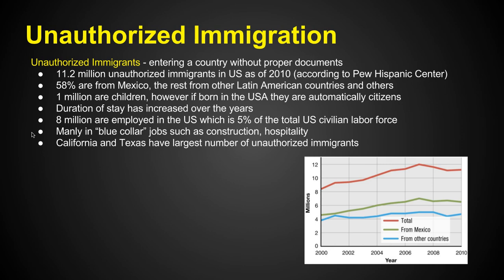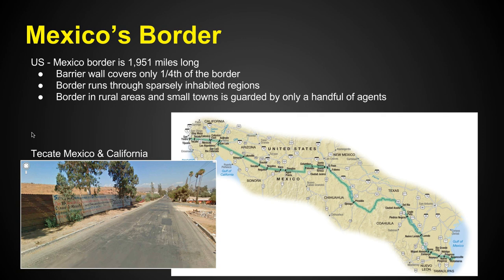The largest places seeing unauthorized immigration are California and Texas — they're right there on the border. Mexico's border is 1,951 miles long, going across the southwestern portion of the United States. The barrier wall covers only one fourth of the border. This border runs through sparsely inhabited regions; out in the desert there's not a lot of people to watch over it, and in a lot of cases there's no wall at all — just open desert. The border in rural areas is guarded by only a handful of agents.